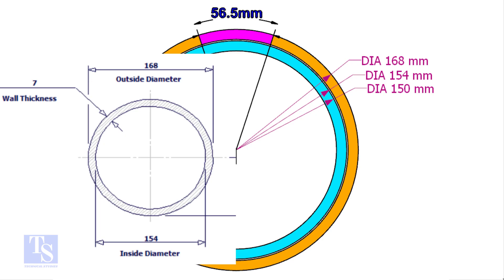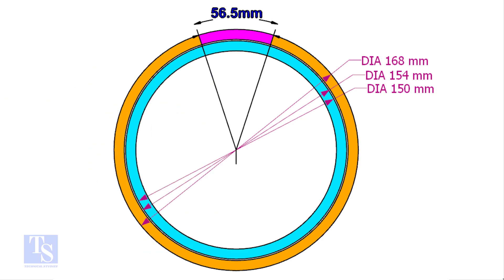The ID of a 6 inch 40 schedule pipe is 154mm. The OD of the clamp shall be 4 to 5mm less than the pipe ID. This clamp OD is 4mm smaller than the ID of the 6 inch pipe.